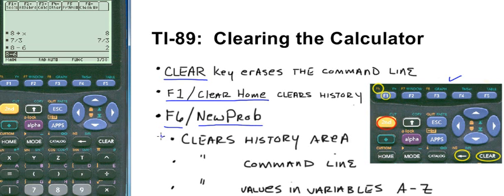So when we do that, these three things will occur at once. We clear the command line, the history area, and the variables A through Z.